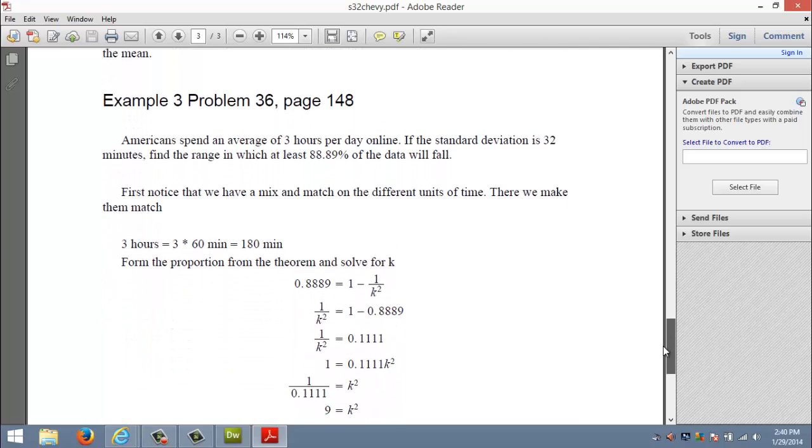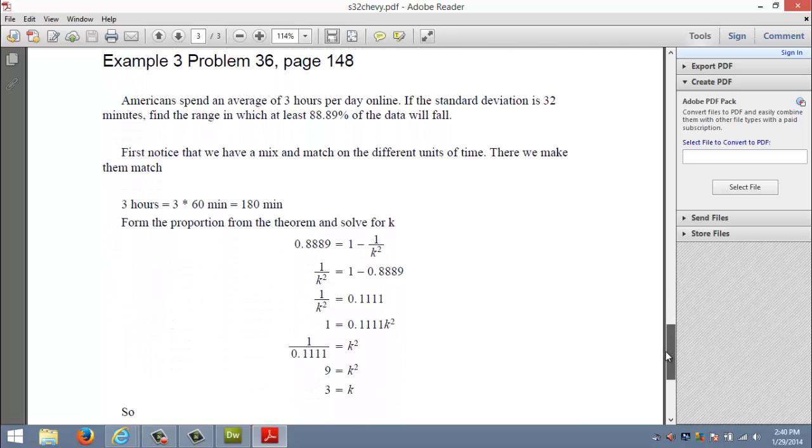Let's take another example from our textbook. Americans spend an average of 3 hours per day online, that's the mean. If the standard deviation is 32, that's S. They want to find the range in which at least essentially 89% of the data would fall.